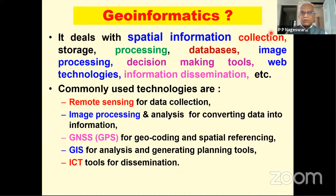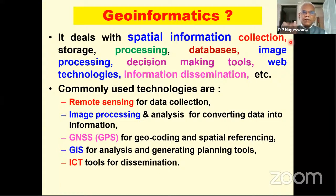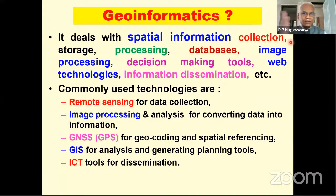Now, what is geoinformatics? Geoinformatics is a technology and a tool for handling spatial data and information — for collecting, storing, processing, creating databases, and image processing — ultimately for decision-making. Web-enabling the geospatial database allows it to be disseminated to those who are unreached. Such an integration of technologies is called geospatial technology or geoinformatics. Geo refers to earth, and geoinformatics involves the collection, processing, and dissemination of valuable information about the earth.